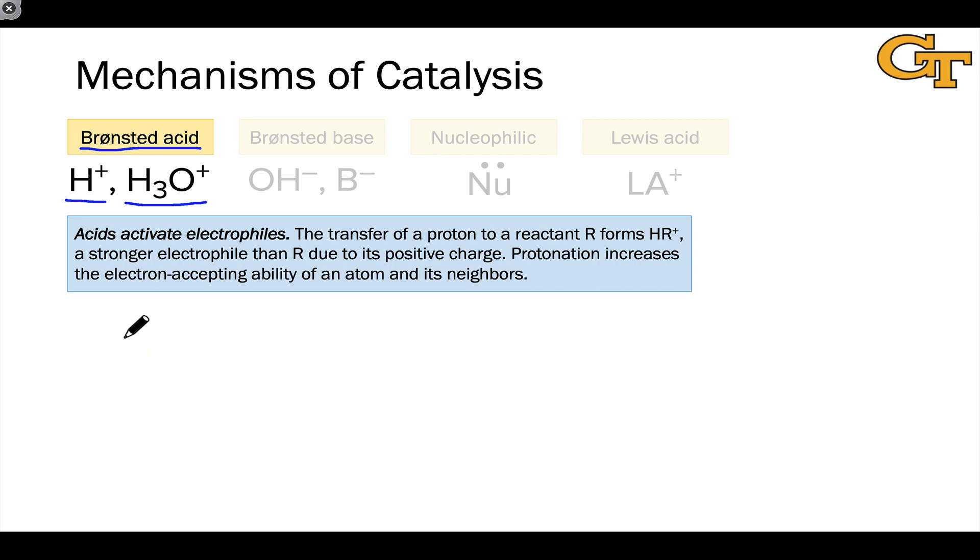To understand how Bronsted acid catalysts work, I want to look at a simple example of a substitution reaction. Rest assured that the principles we develop here will generalize to any of the elementary steps we've seen previously. So let's imagine we're looking at a simple SN2 type process in the uncatalyzed reaction, in which a nucleophile substitutes for a leaving group or nucleophuge.